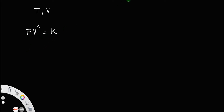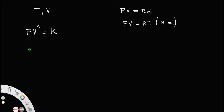We have already proved this, and we have the ideal gas equation PV equal to nRT, and for one mole of a gas PV equal to RT, where n equal to 1. So, P can be written as RT divided by V.